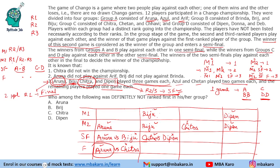Now applying condition 2: Aruna did not play against RF. In group A, Aruna is rank 1 and plays in match 2. That match must be between the other two players — Azul and RF. Since Aruna doesn't play RF, Azul must have won match 1 (beating RF), and then Aruna played against Azul in match 2.